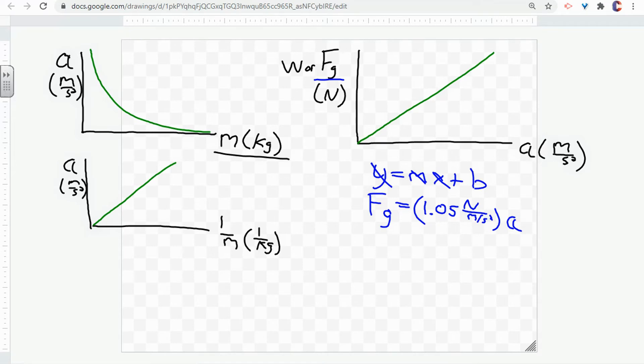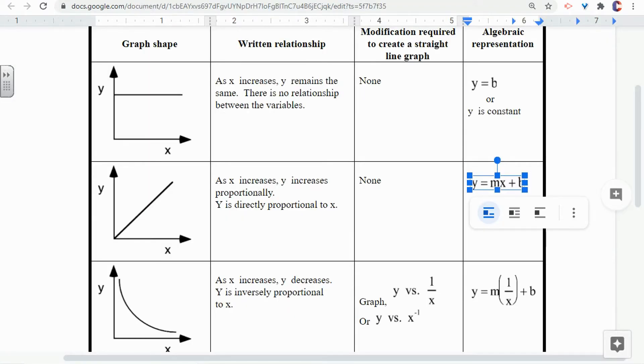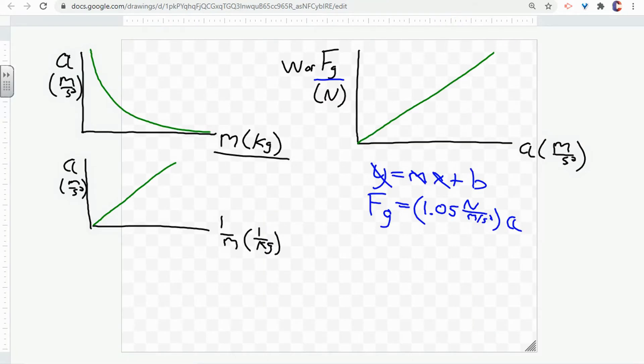So there's our mathematical model for the weight versus acceleration. So what about the acceleration versus 1 over mass? So when we go back to our graphical method summary sheet, we can see that the equation we're going to use is Y equals M times 1 over X plus B.